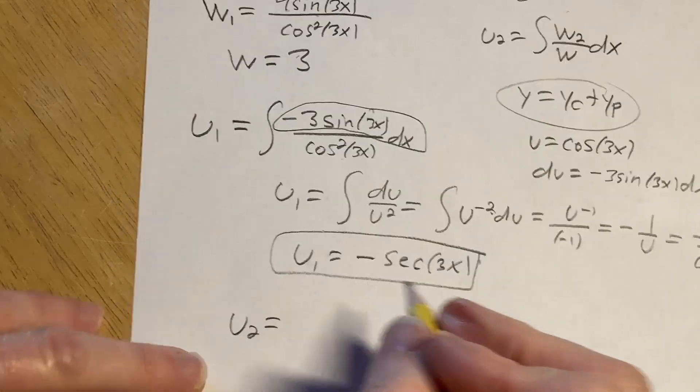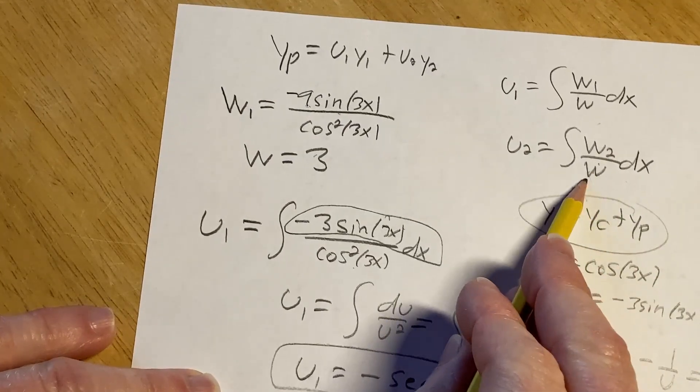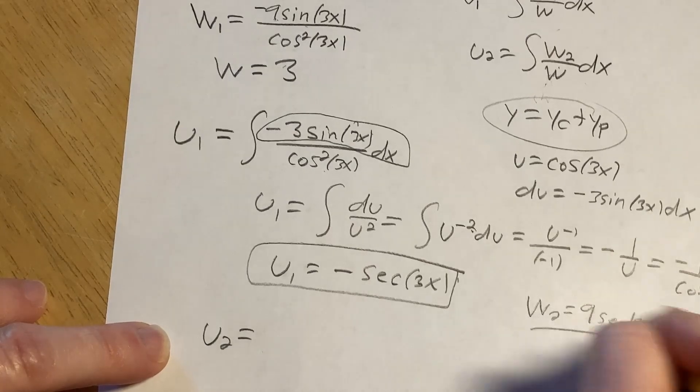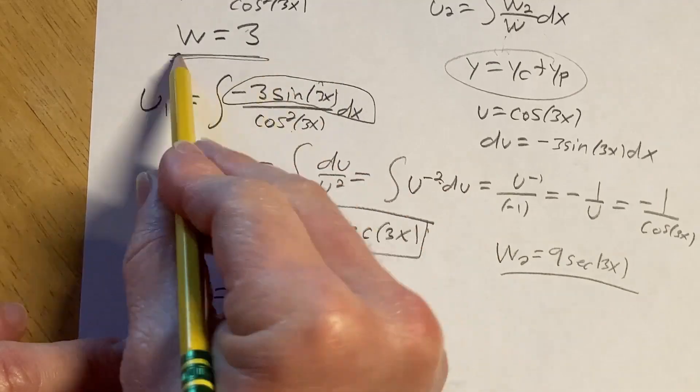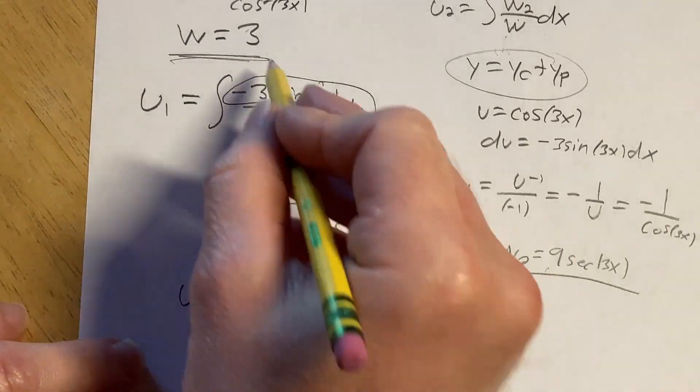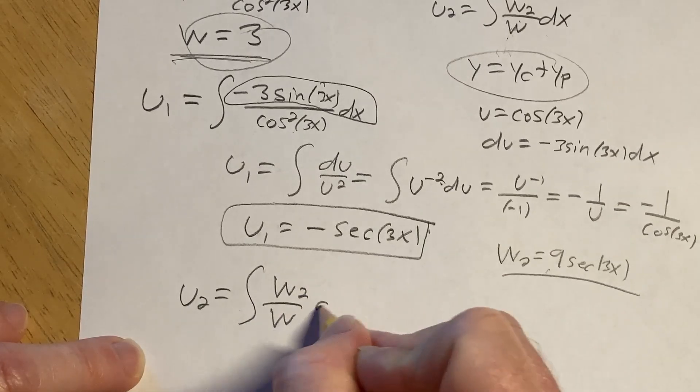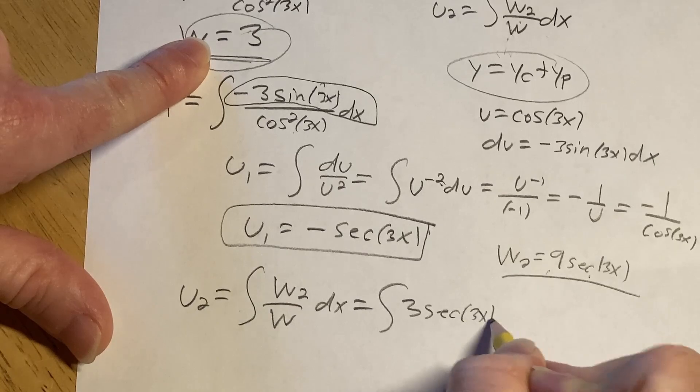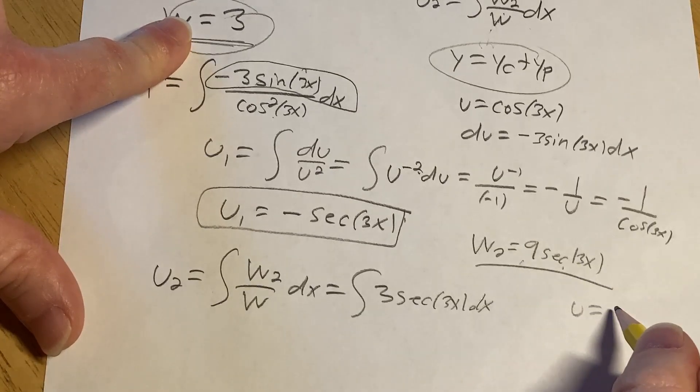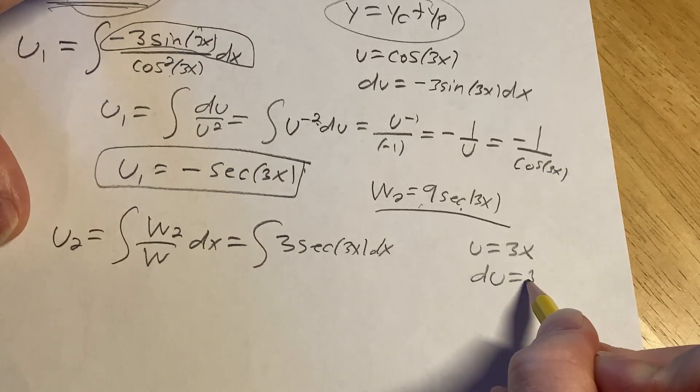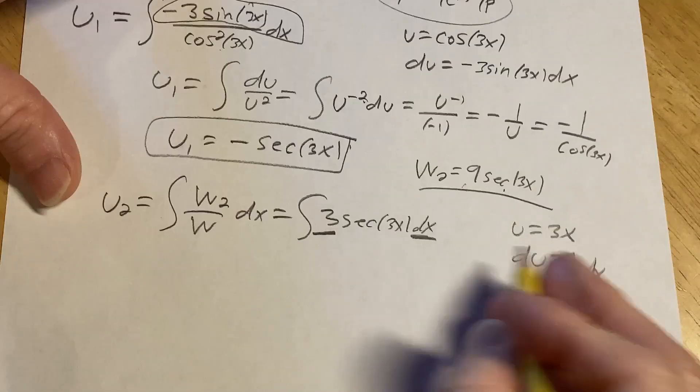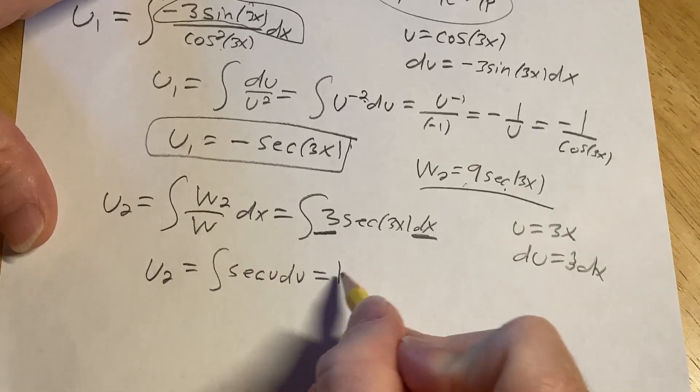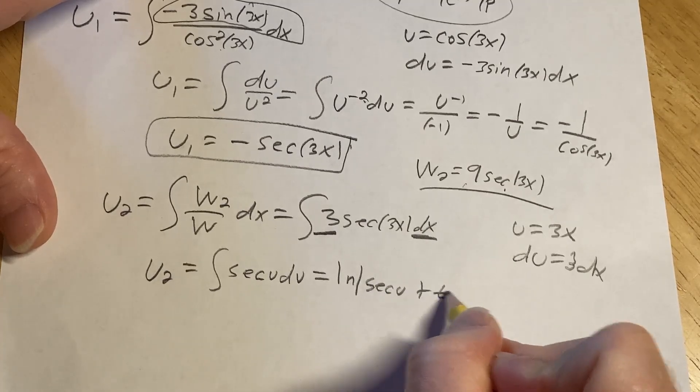Let's do u sub 2, which is w2 over w. So w2 was 9 secant 3x. So we're dividing it by w, which is 3. So 9 secant 3x divided by 3 is just going to give us 3 secant 3x dx. Make a substitution, let u be 3x. du is 3 dx. Look at that. All that's du. Super simple. u sub 2 is secant u du. This is an integral that we have memorized. It's the natural log of the secant of u plus the tangent of u.